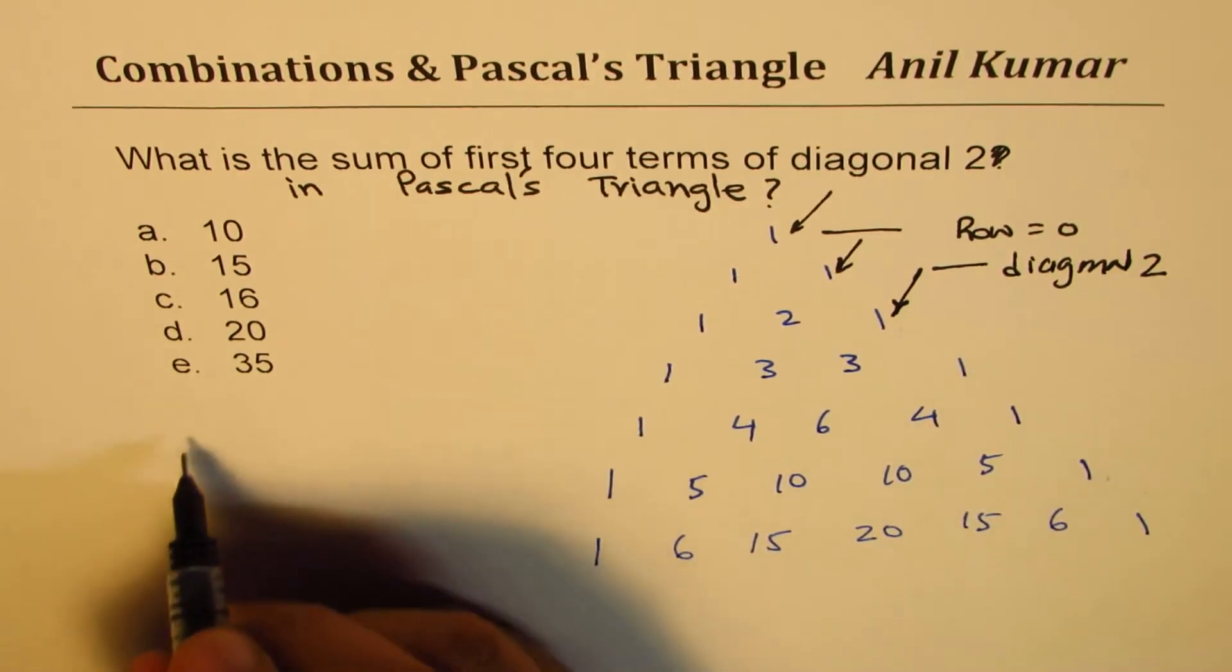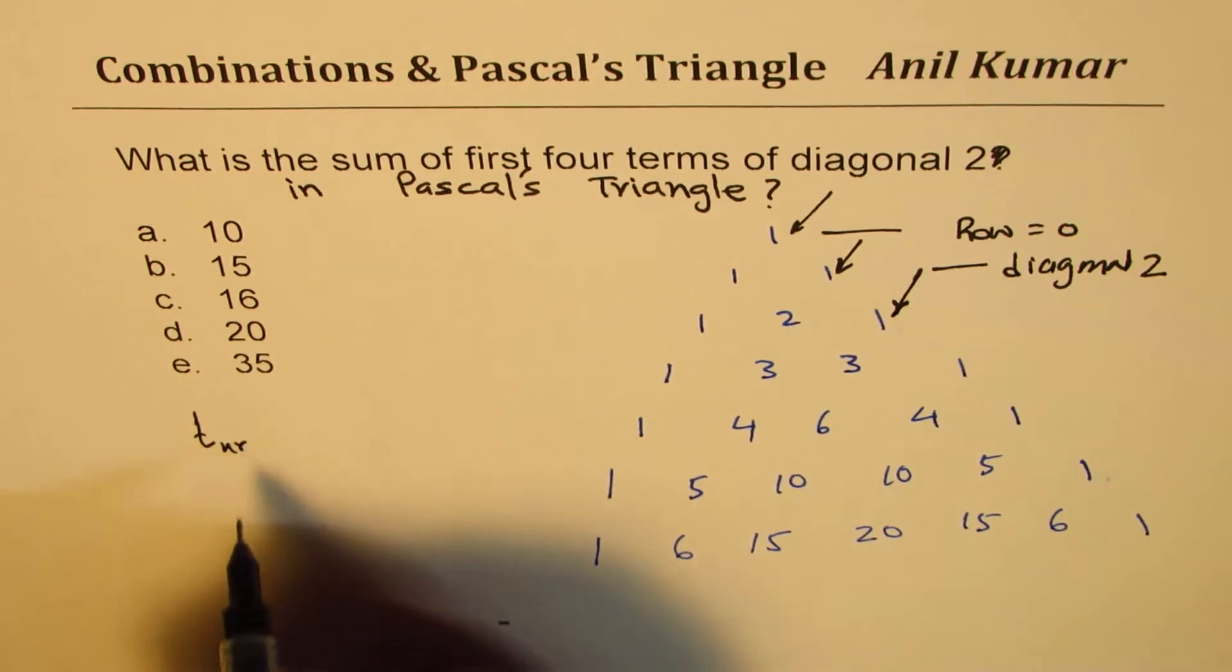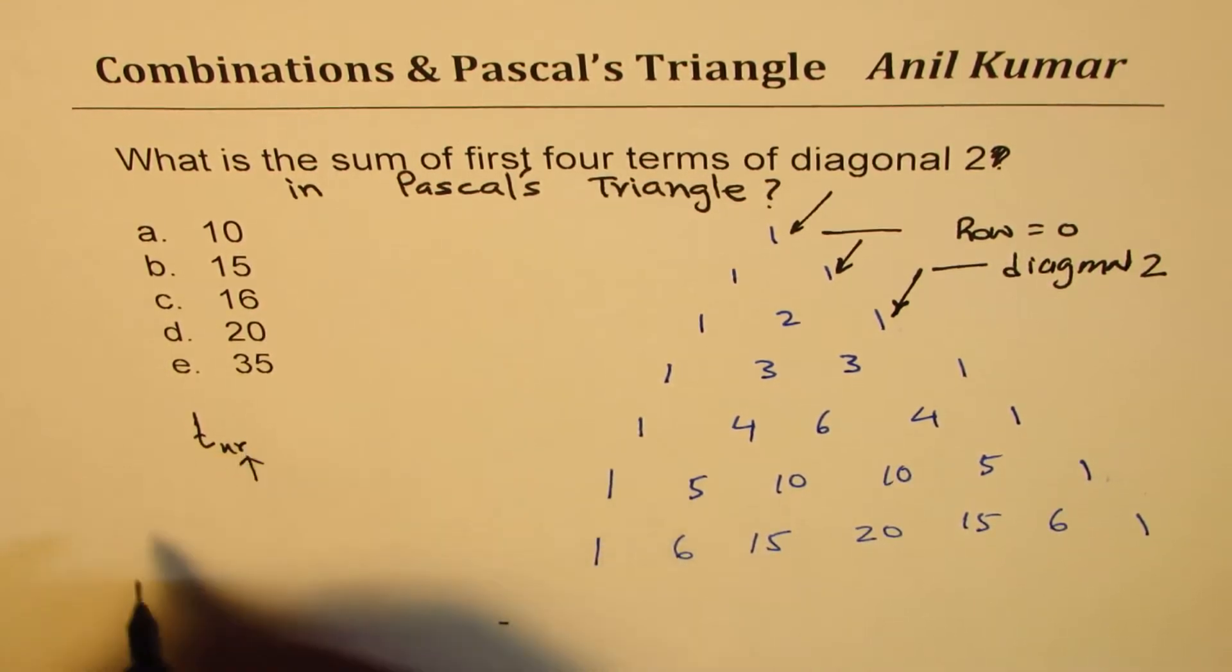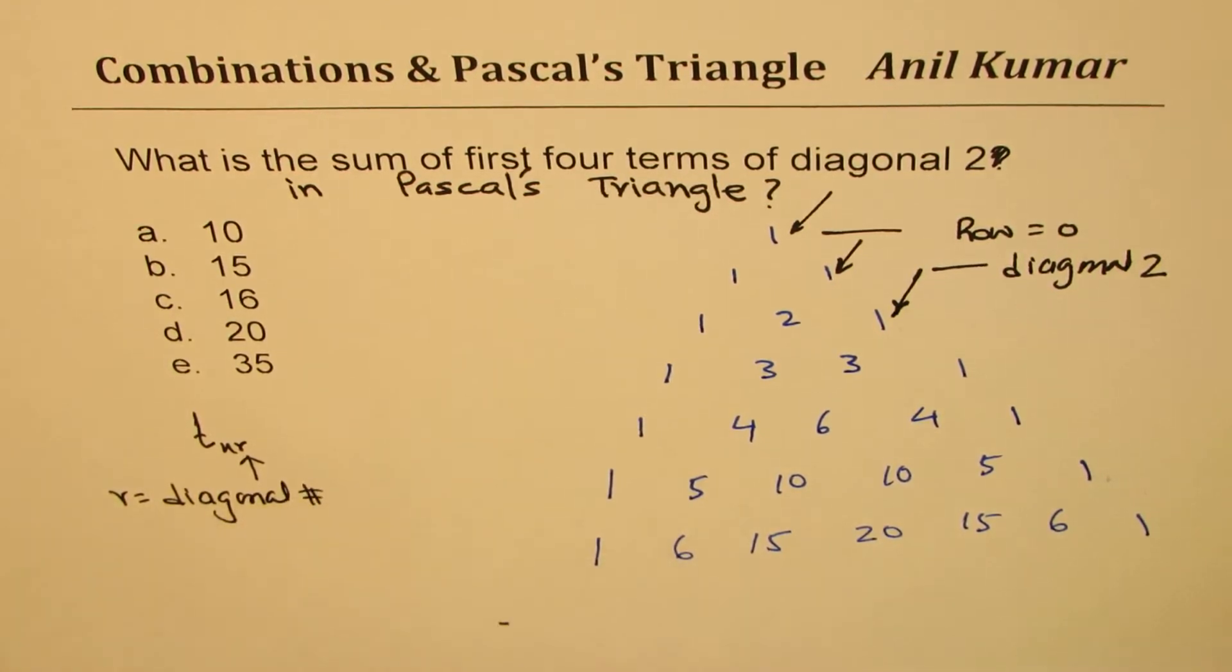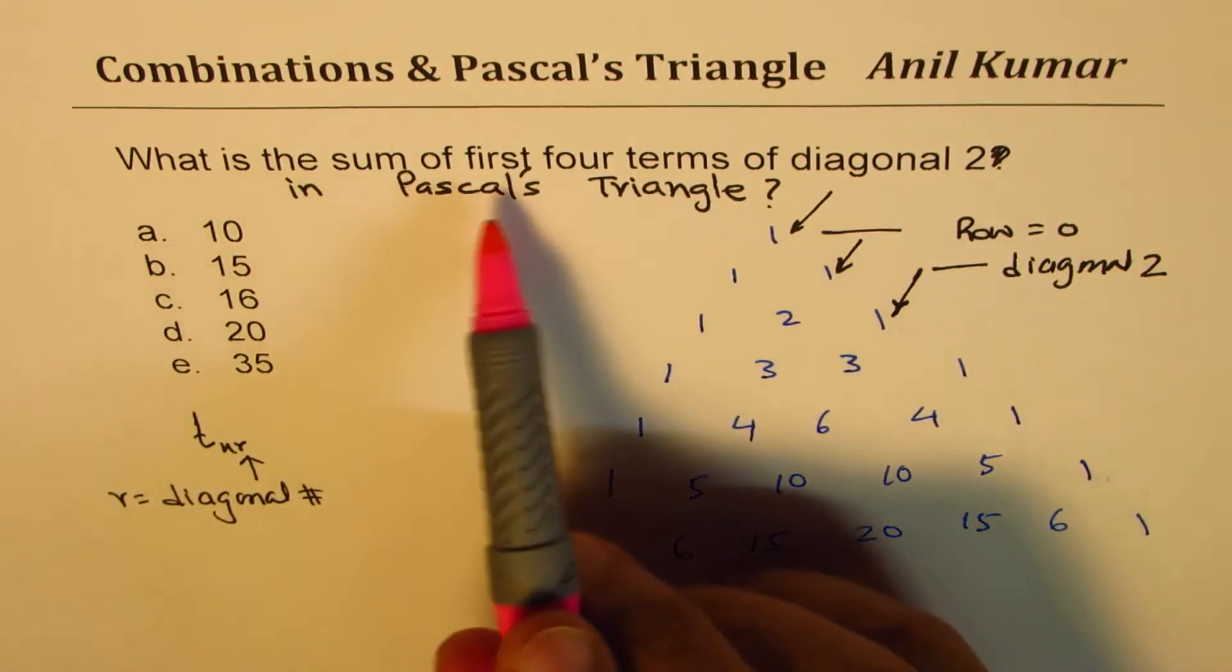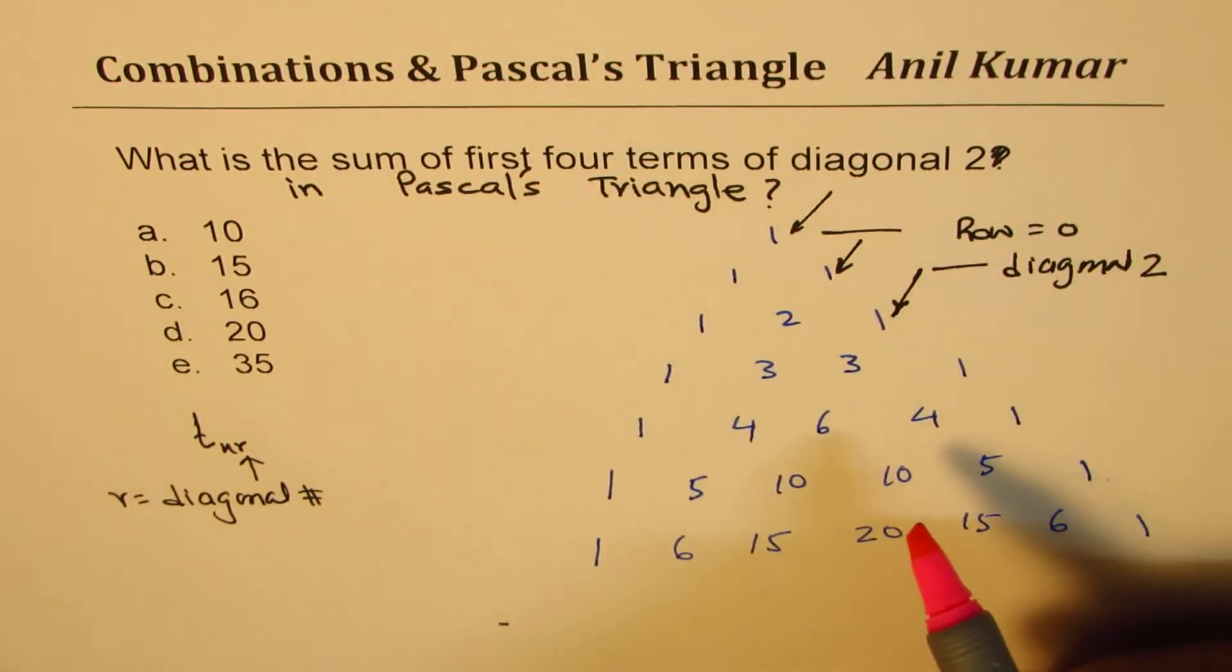So when we write TNR, right, TNR, then R is the diagonal number. R equals two, diagonal number. Is it okay? So we are now interested in finding sum of first four terms in the second diagonal.